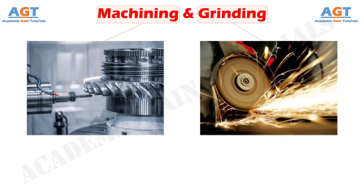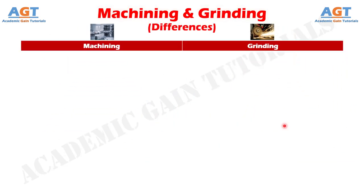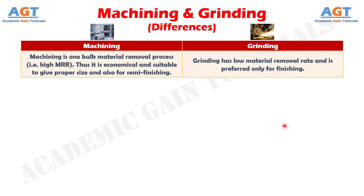Let's look into the basic differences between machining and grinding in a tabular form. Difference number 1: machining is a bulk material removal process with a high material removal rate, thus it is economical and suitable to give proper size and for semi finishing, whereas grinding has a low material removal rate and is preferred only for finishing.